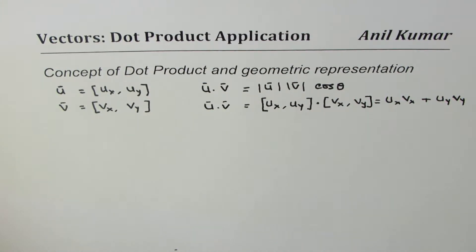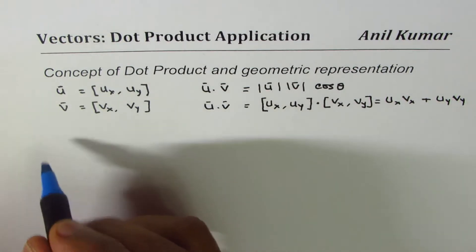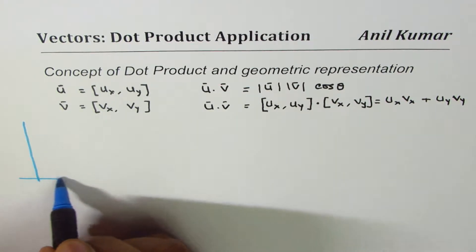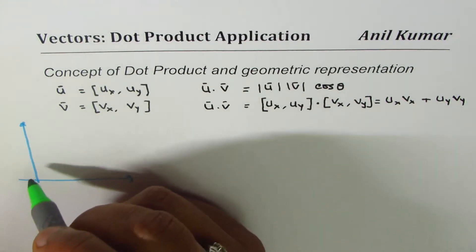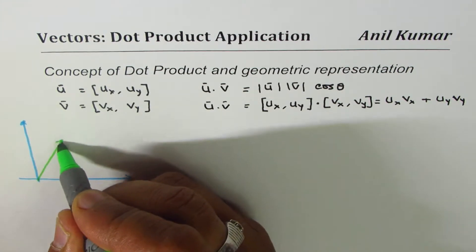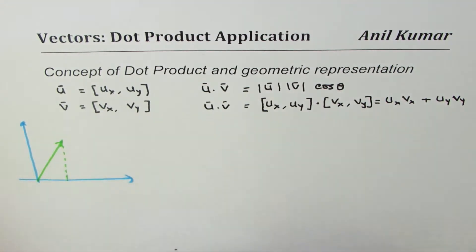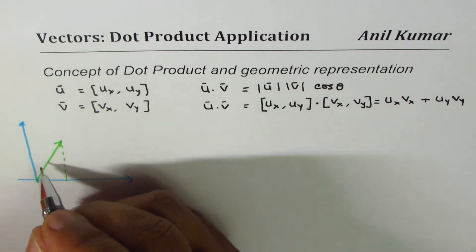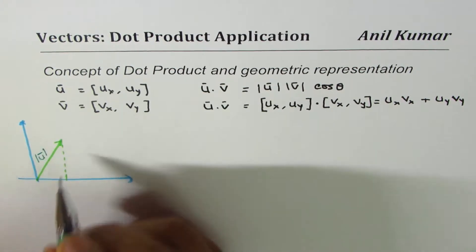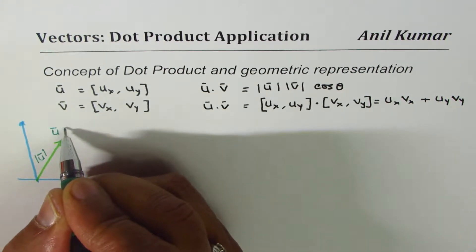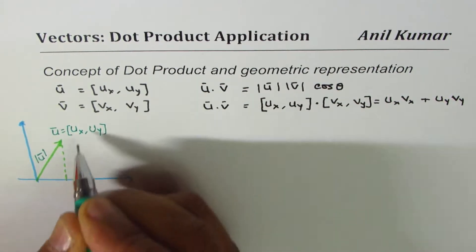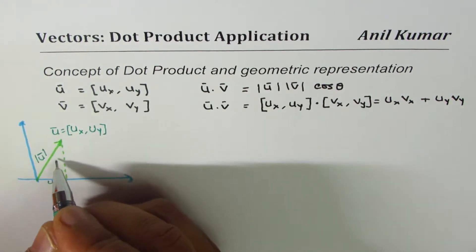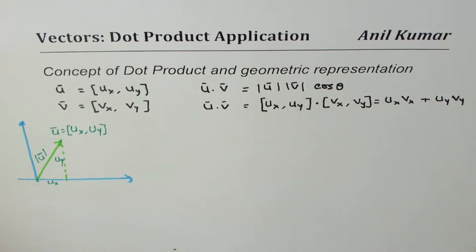Let me geometrically show what these vectors are. Let's say this is a coordinate plane. Vector u is drawn here, and for this vector u we write its components — this becomes the magnitude of u. The vector u in R2 can be written as (ux, uy), where this side is ux and this side is uy.